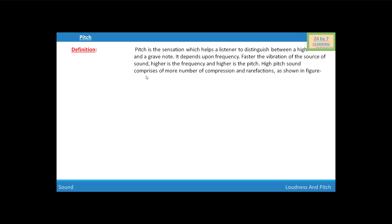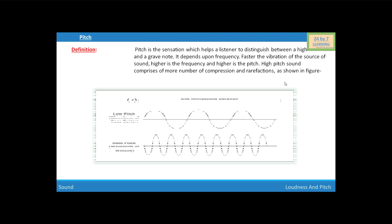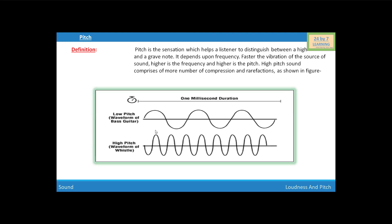Higher pitch sound comprises more number of compressions and rarefactions. As you can see in this figure, this is the low pitch sound, which comprises fewer compressions and rarefactions. And this is the high pitch sound, which comprises more compressions and rarefactions.